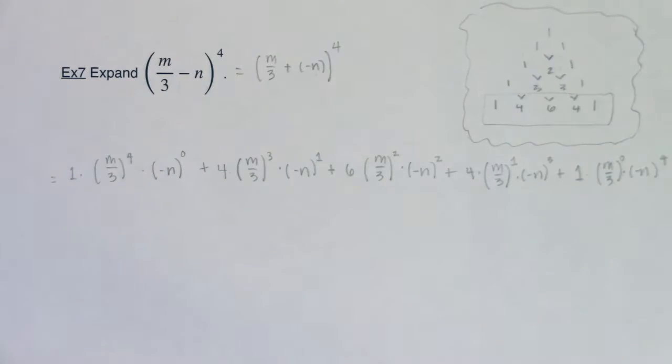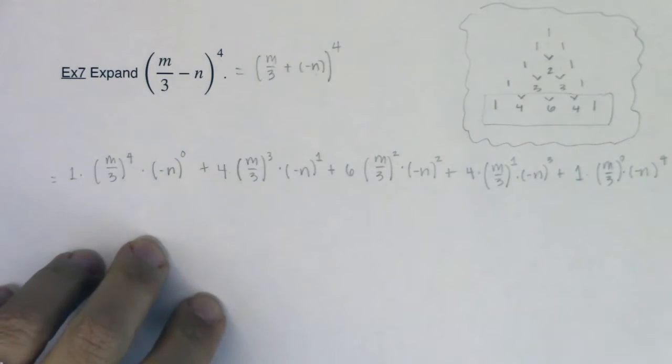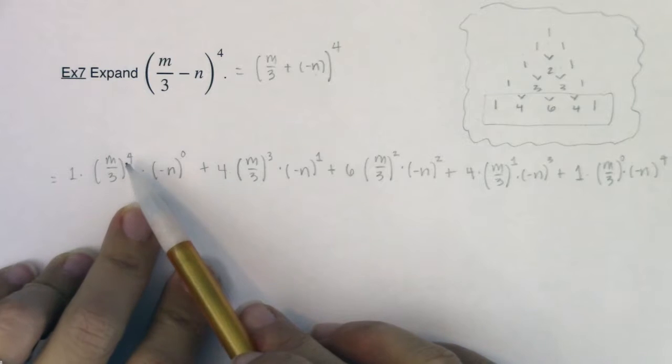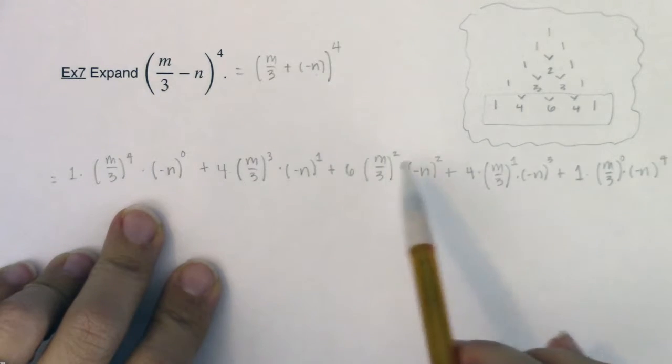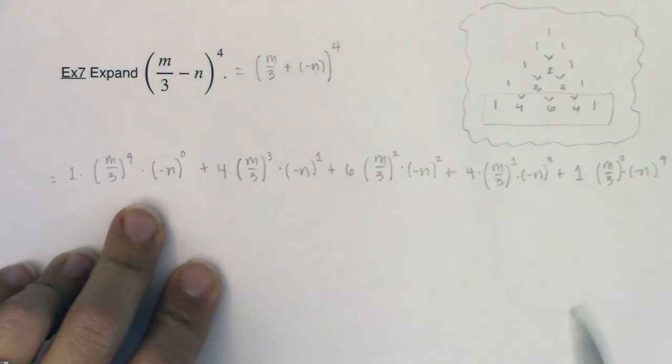And again, I'm just going to do a quick check and make sure that all of my exponents are adding up to 4. So 4 plus 0, 3, 1, 2, 2, 1, 3, 0, 4. All right, so that's looking good.